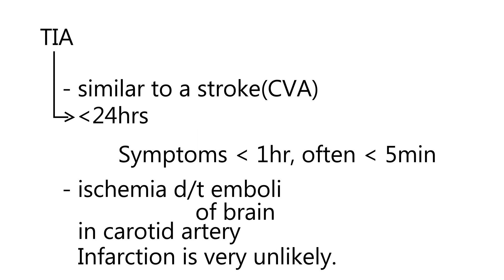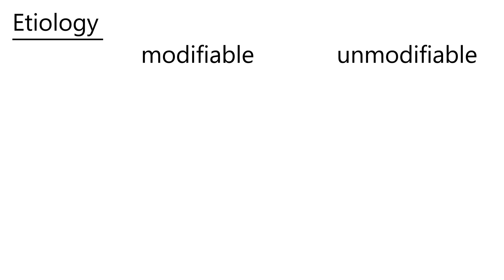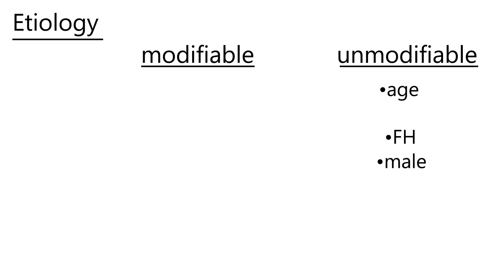The etiology of TIA is broken up into two categories: modifiable and unmodifiable. The unmodifiable list is shorter. It includes age, family history, and male gender as risk factors.